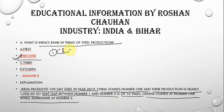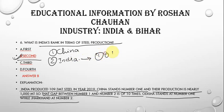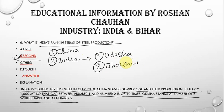In terms of country ranking: first is China and second is India. Within India, the top steel-producing states are Odisha at number 1 and Jharkhand at number 2. These two states have the highest steel productivity in India.